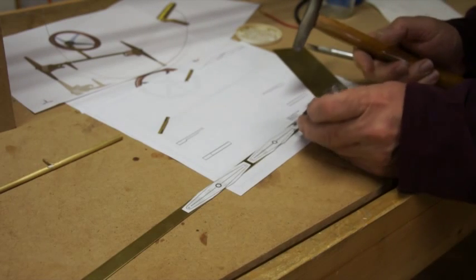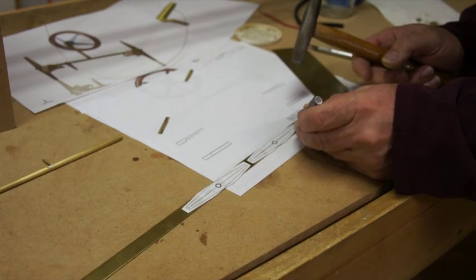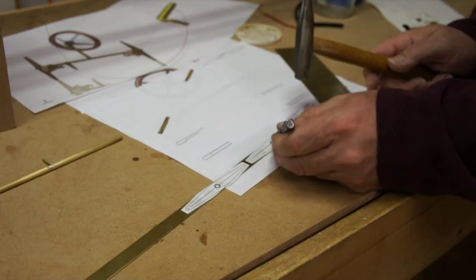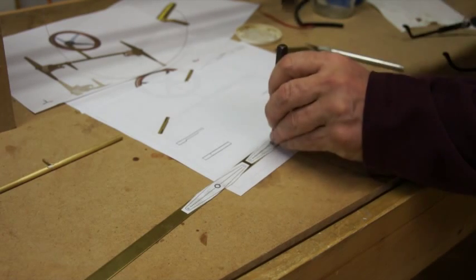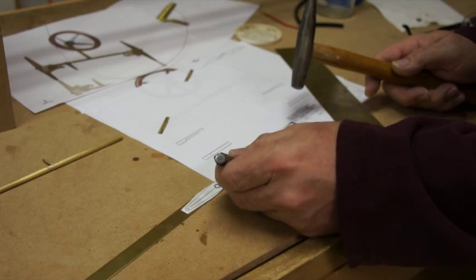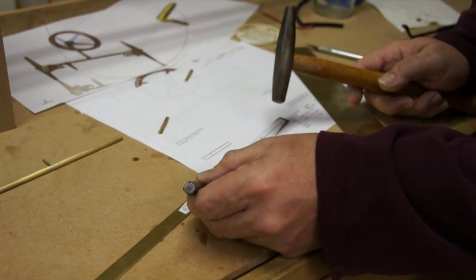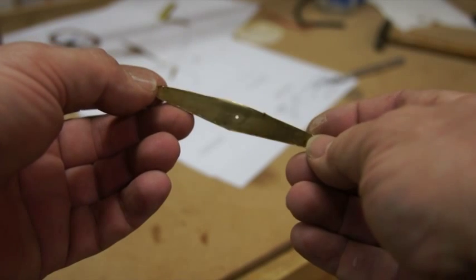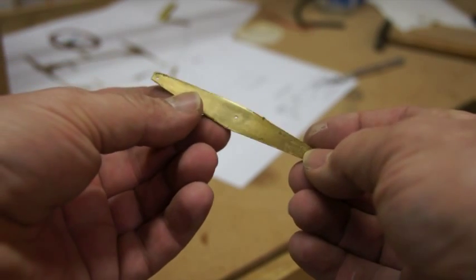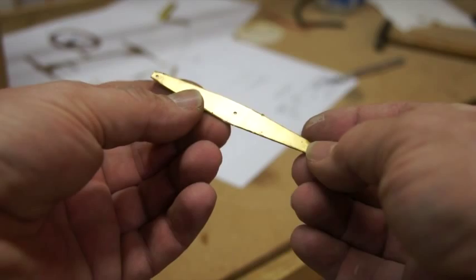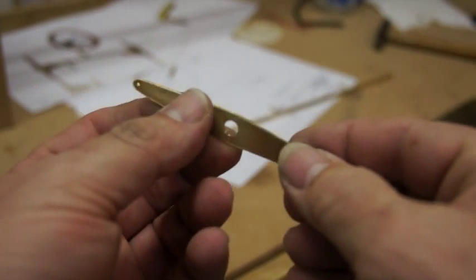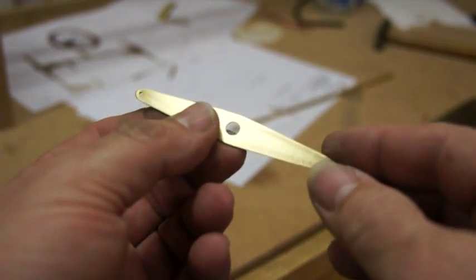It begins by cutting out a printout of the part and attaching it to a piece of strip brass using spray adhesive. The location where the parts need to be drilled are marked with a punch. The parts are then cut out of the strip brass and are rough to begin with, but some filing, sanding, and shaping, and they come out quite nice.